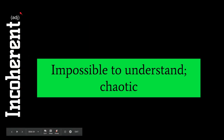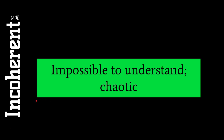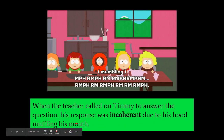Our next word is incoherent, an adjective meaning impossible to understand and chaotic. If we already know incoherent, we know the definition of something difficult to understand — but make sure you know this word has connotations of being chaotic in nature. If someone mumbles, they are incoherent, but incoherent is also used when things are all over the place. When the teacher called on Timmy to answer the question, his response was incoherent due to his hood muffling his mouth.